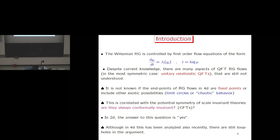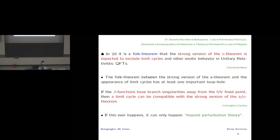This concerns the renormalization group. As you all know, the Wilsonian renormalization group is controlled by first-order equations: g-dot equals a beta function. Despite the many things we have learned over the years, there are many aspects of renormalization group flows across four dimensions — whether fixed points are the only endpoints or whether they include other exotic possibilities like limit cycles or chaotic behavior.